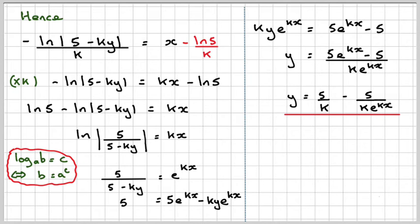We're told that as x goes to infinity, e to the kx will also go to infinity. So here we're going to have 5 over a very, very large number, which means that this goes to 0. Hence, the whole thing will go to y is 5 over k.